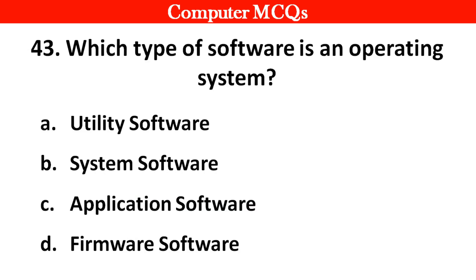Next question: Which type of software is an operating system? Options A. Utility software, B. System software, C. Application software, D. Firmware. Right answer is option B: System software.